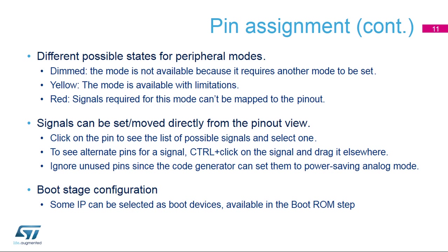There are different possible states for peripheral modes. Dimmed: the mode is not available because it requires another mode to be set — place the mouse pointer over the dimmed mode to see the reason; it may require a disabled clock source or may have other peripheral dependencies. Yellow: the mode is available with limitations because some options are blocked by conflicts — for example, the USART may not be configured to synchronous mode because all selectable clock pins are taken. Red: signals required for this mode cannot be mapped to the pinout, which may occur if a crucial signal has all its alternate pins used by other peripherals.